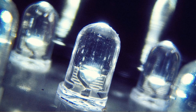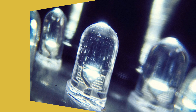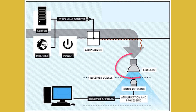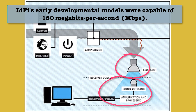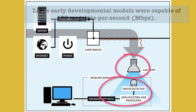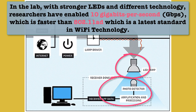Li-Fi data is transmitted by the LED bulbs and received by photoreceptors. Li-Fi's early development models are capable of 150 Mbps of speed, and some commercial kits enabling that speed have been released. In the lab, with stronger LEDs and different technology, researchers have enabled 10 Gbps, which is faster than 802.11ad — the latest standard in Wi-Fi technology.